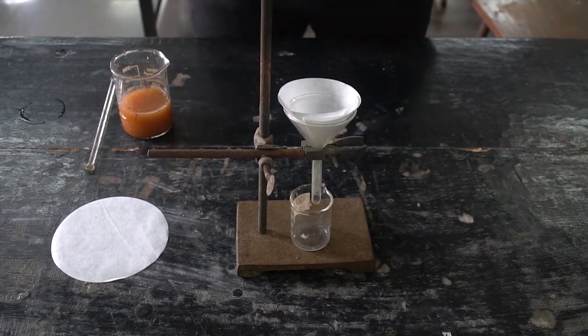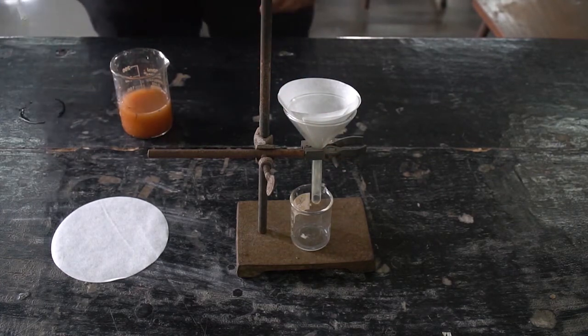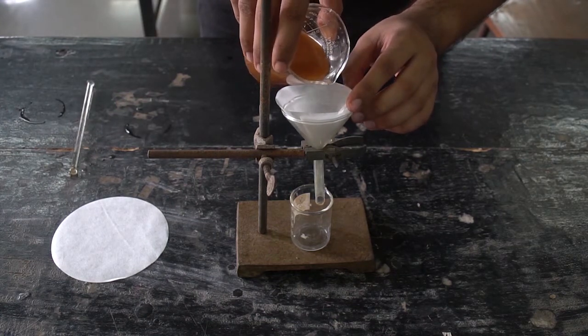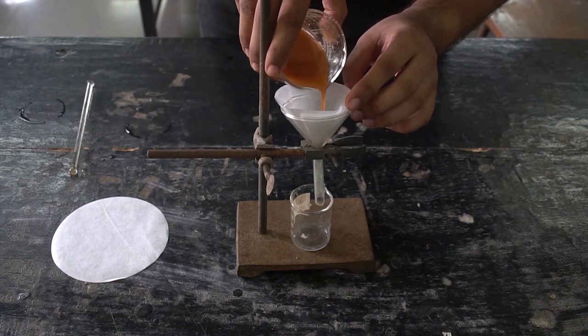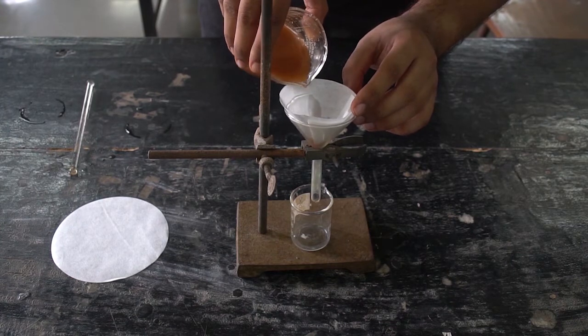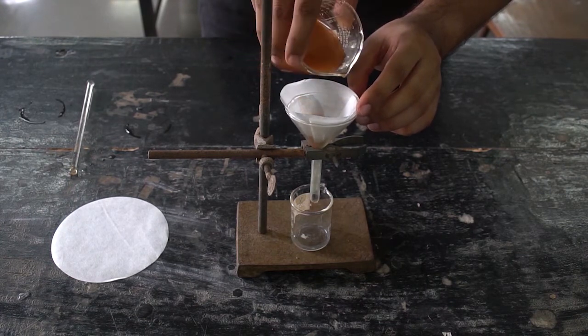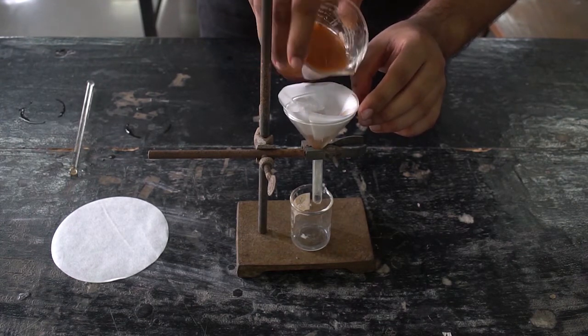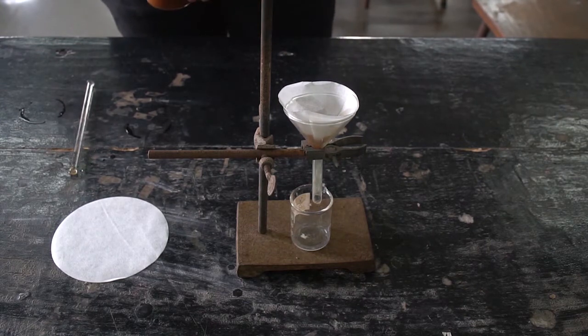Then we slowly pour the muddy water into the filter paper, first making sure that we wet the filter paper so that there is even percolation of the water through the filter paper.